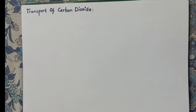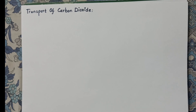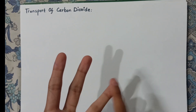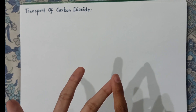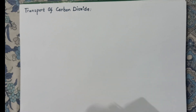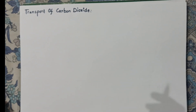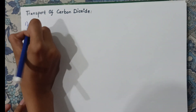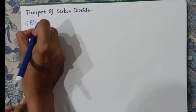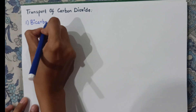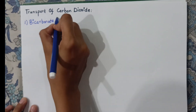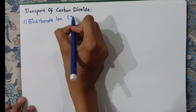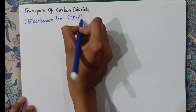Now let's discuss the transport of carbon dioxide. Basically there are three methods: in the form of bicarbonate ions, as carboxyhemoglobin, and in dissolved form. We will first study the most important and most major method, that is transport in the form of bicarbonate ions — which accounts for 70% of carbon dioxide transport in the body.